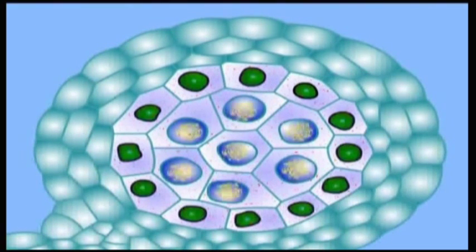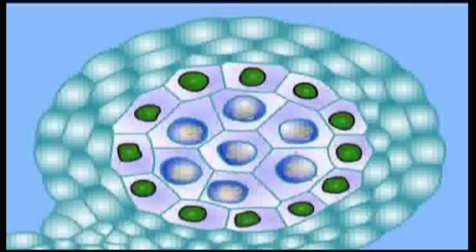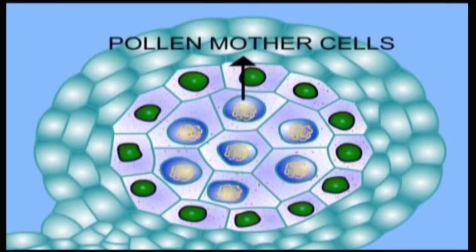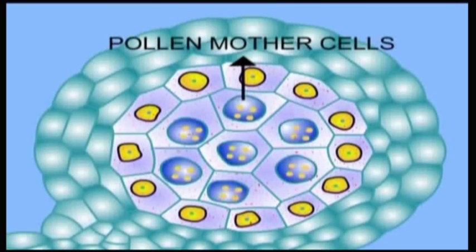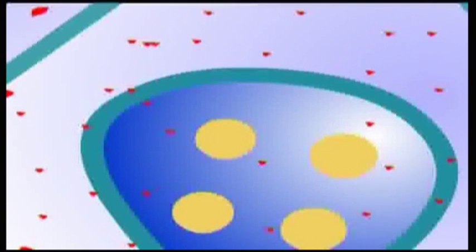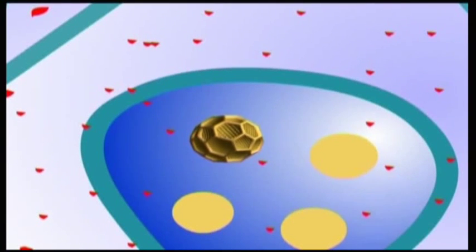Some of the cells in this tissue develop as pollen mother cells or microspore mother cells. Up to this stage cells are diploid i.e. 2N. Each pollen mother cell undergoes meiosis to give rise to four daughter cells which develop into pollen grains.